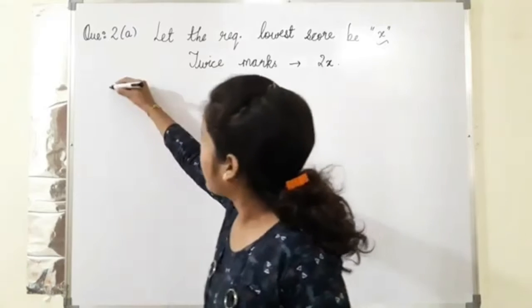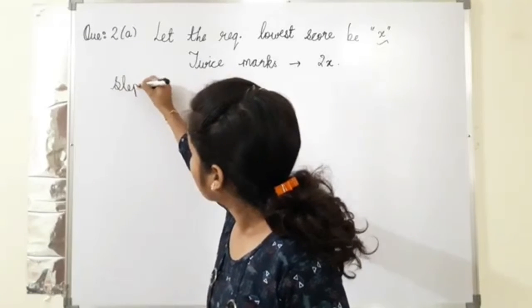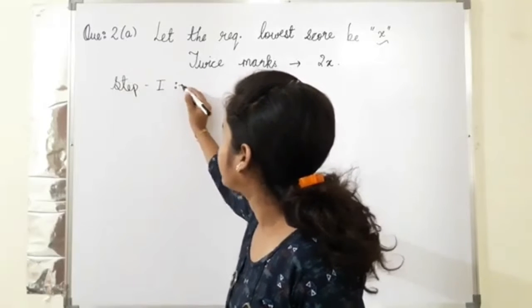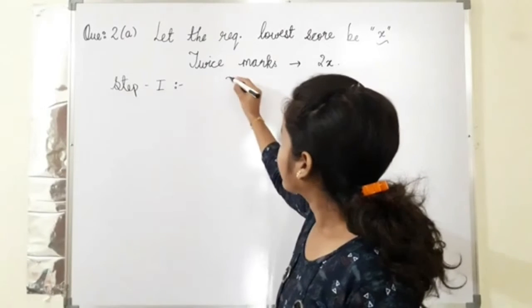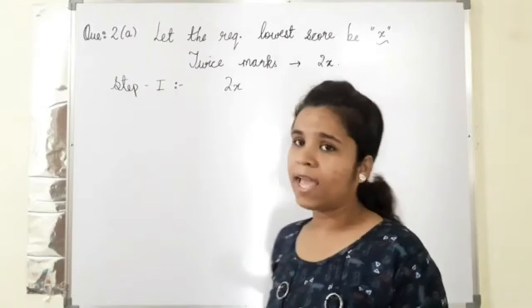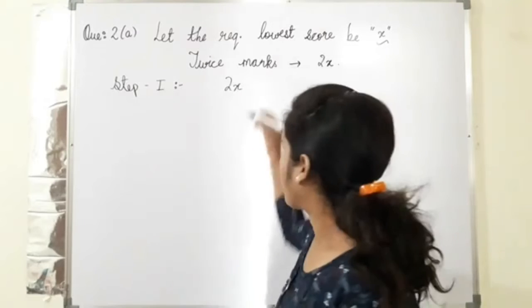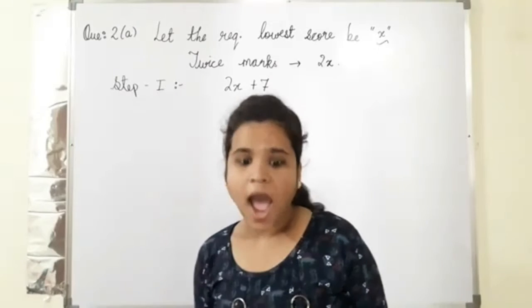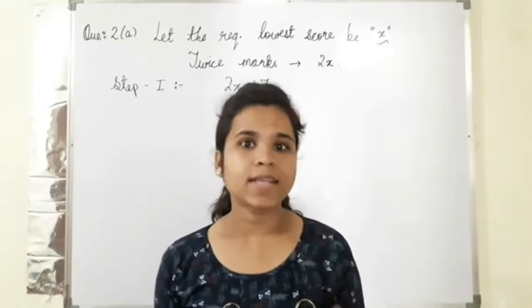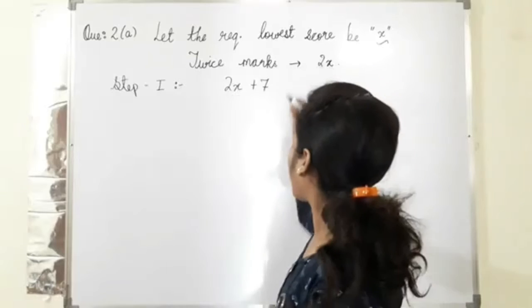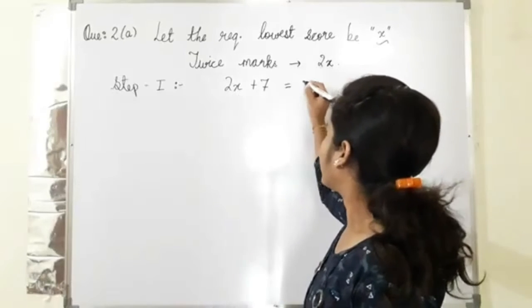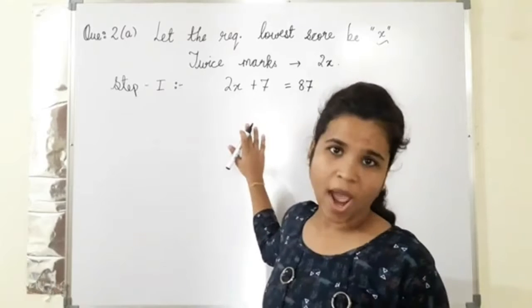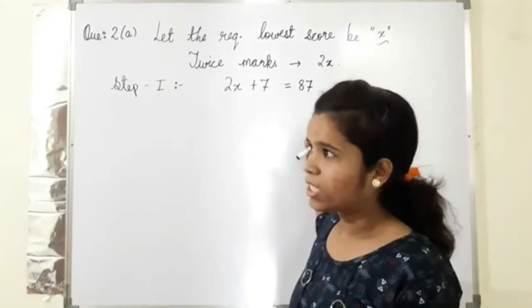If the condition is given, twice number plus 7. So step one, the required equation can be written as 2x plus 7. And the highest score will be 87. So the overall result is 87.